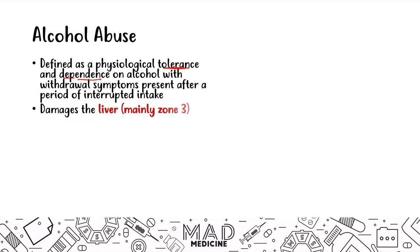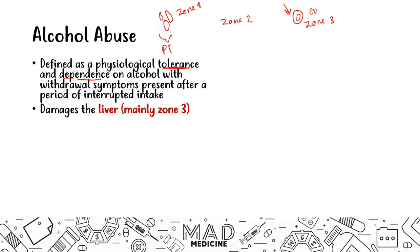Alcohol damages the liver, mainly zone three. Zone one is located near the portal triad, zone two is the parenchyma, and zone three is nearest to the central vein — this is where alcohol affects the liver. Everything else, like hepatitis viruses, generally affects zone one because that's where blood is coming in. But zone three is alcohol.